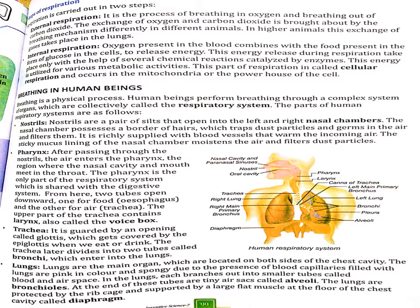The bronchi enter the lungs, which are our main organ located in the chest cavity on both sides. The lungs are pink in color and spongy due to the presence of blood capillaries. At the end of the tubes are the alveoli.